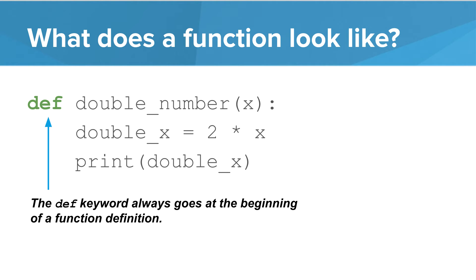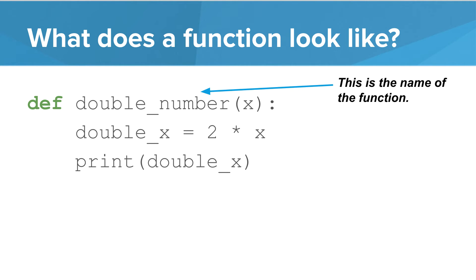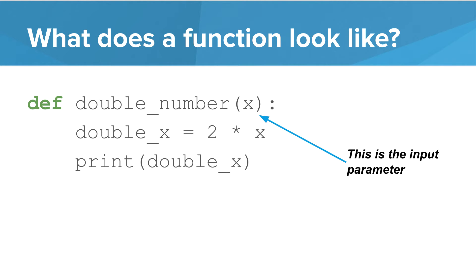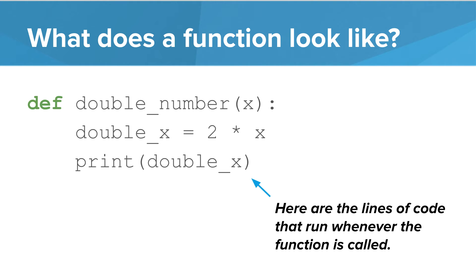It starts with the word def, and it's called double_number. We can pass a number from our program to the function using parameters. In this case, our parameter is the variable x. Below the first line is the body of the function. This part will make more sense when we talk about using functions. For now, think of double_number as an alias for these two statements.